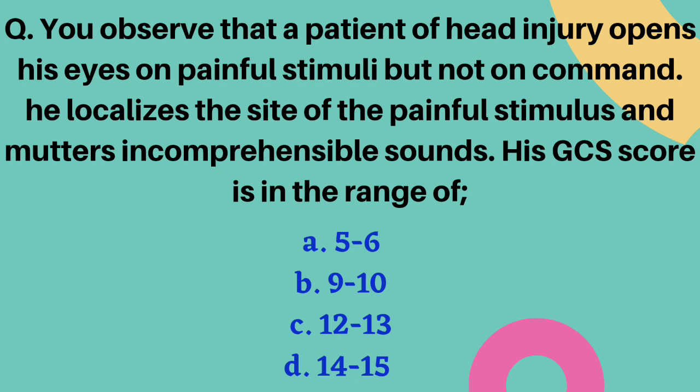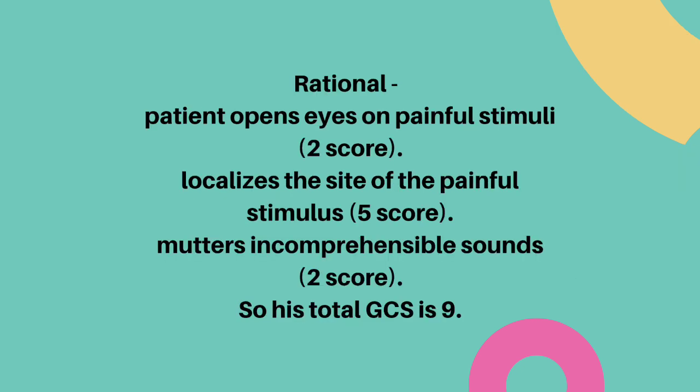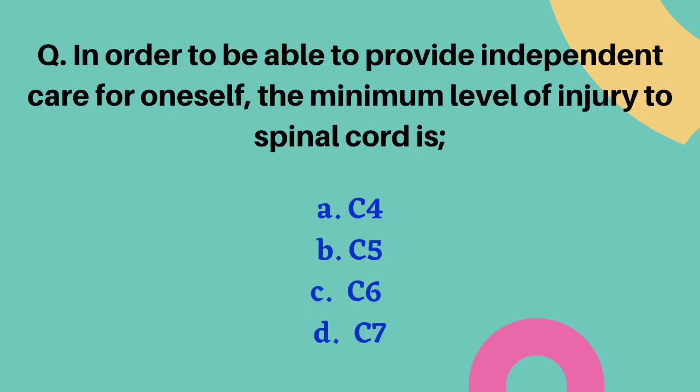A patient with head injury opens his eyes on painful stimuli but not on command, localizes the site of painful stimulus, and mutters incomprehensible sounds. What is his GCS score range? Options are 5–6, 9–10, 12–13, or 14–15. The correct answer is option B, 9–10. Eye opening to painful stimuli scores 2, localizing pain scores 5, and incomprehensible sounds scores 2, giving a total GCS of 9.